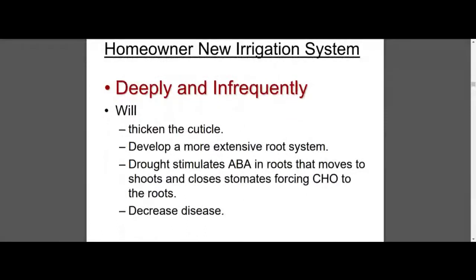The important thing is to water as infrequently and as deep as possible to get your grass roots down and save water. That's the deep and infrequent principle — the other red thing. By doing that you'll get much deeper roots. You'll stimulate ABA, one of the hormones we talked about earlier, which helps roots grow down and decreases disease. When you overwater, roots won't go down, plants will be succulent, and it's just a disease waiting to happen. Holding back on the water is really important.